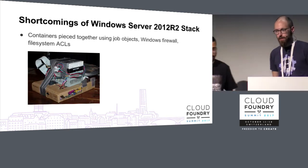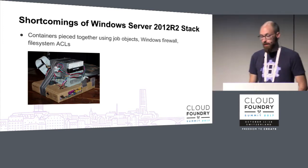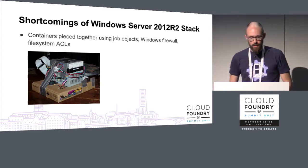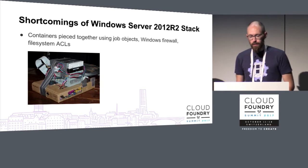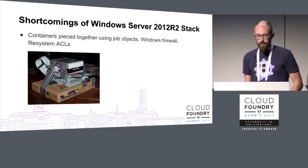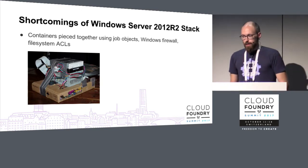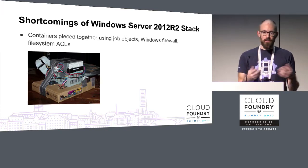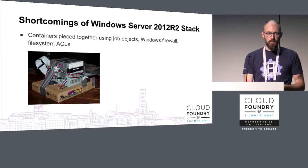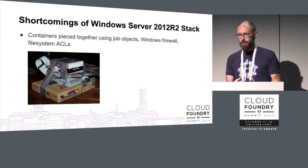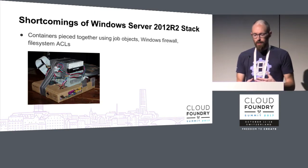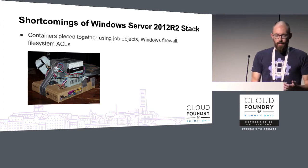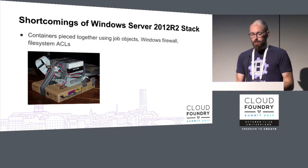There are some shortcomings with the 2012 stack. Basically, those containers are pieced together using job objects, the Windows firewall, and file system ACLs — all relatively limited. Job objects weren't really intended to be used for containers; they were meant to be similar to Linux process groups, so you could say these processes are related and kill them all at once. Job objects were a nice way to approximate containers and apply resource limits to some degree, but they really didn't deliver everything you'd expect from containerization, especially compared with Linux.